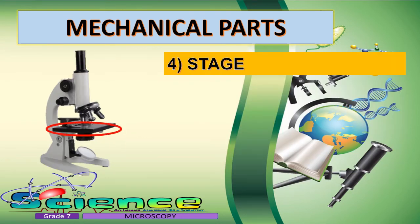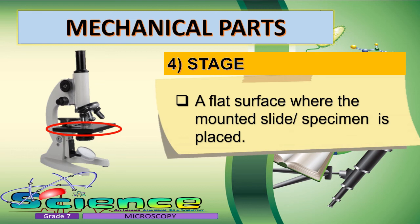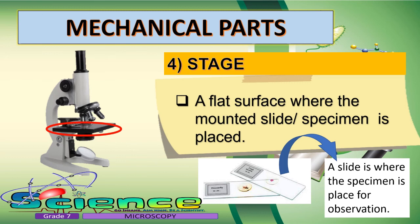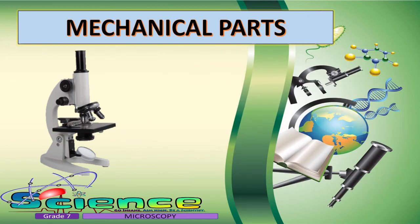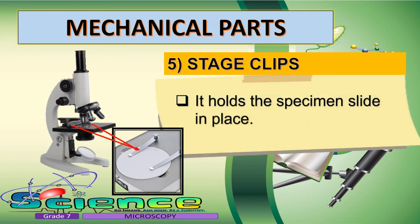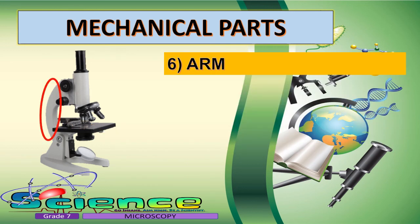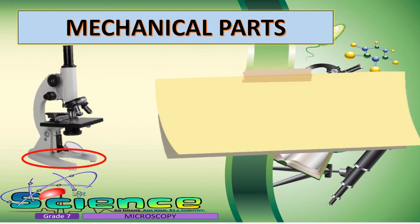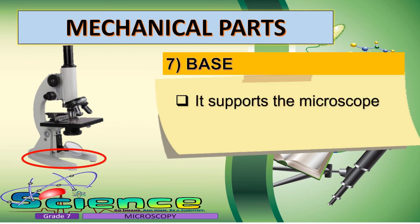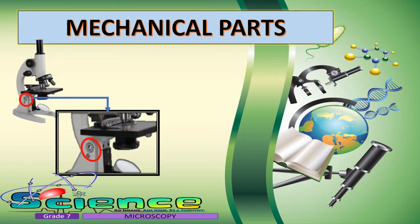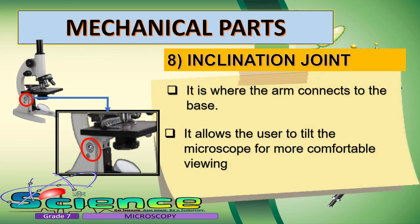The stage is a flat surface where the mounted slide or specimen is placed. A slide is where the specimen is placed for observation. The stage has stage clips, which hold the specimen slide in place. The arm supports the tube and is used to carry the microscope. The base serves as the support of the full microscope. The arm and the base are connected by the inclination joint, which allows the user to tilt the microscope for more comfortable viewing.